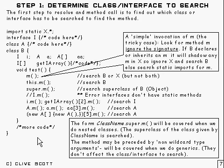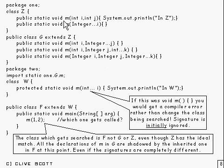This is just a little example I've made to illustrate the points I'm making. I've got two packages here, and in this package one we've got this class G which extends Z, and there's a whole lot of methods called M declared in G and in Z as well.